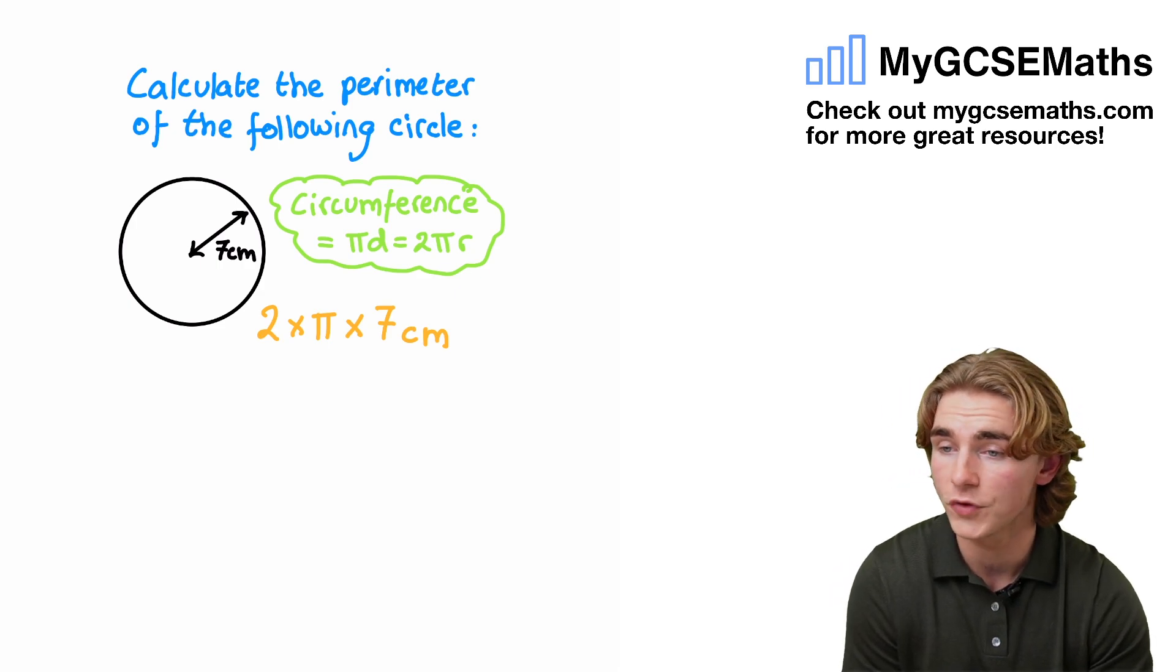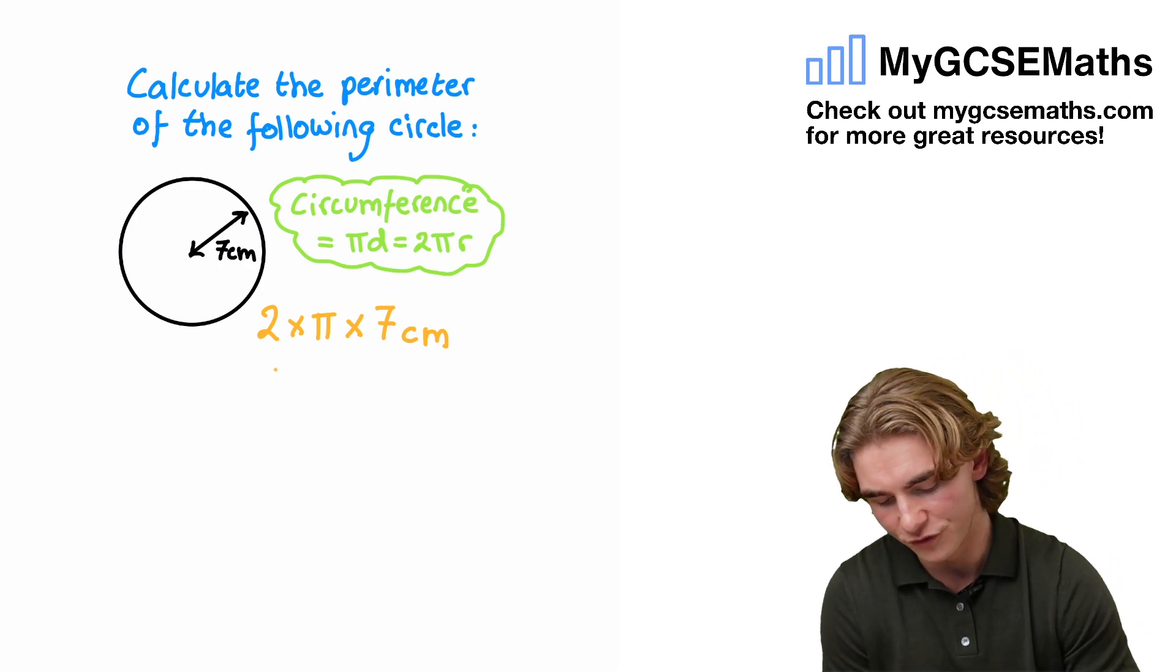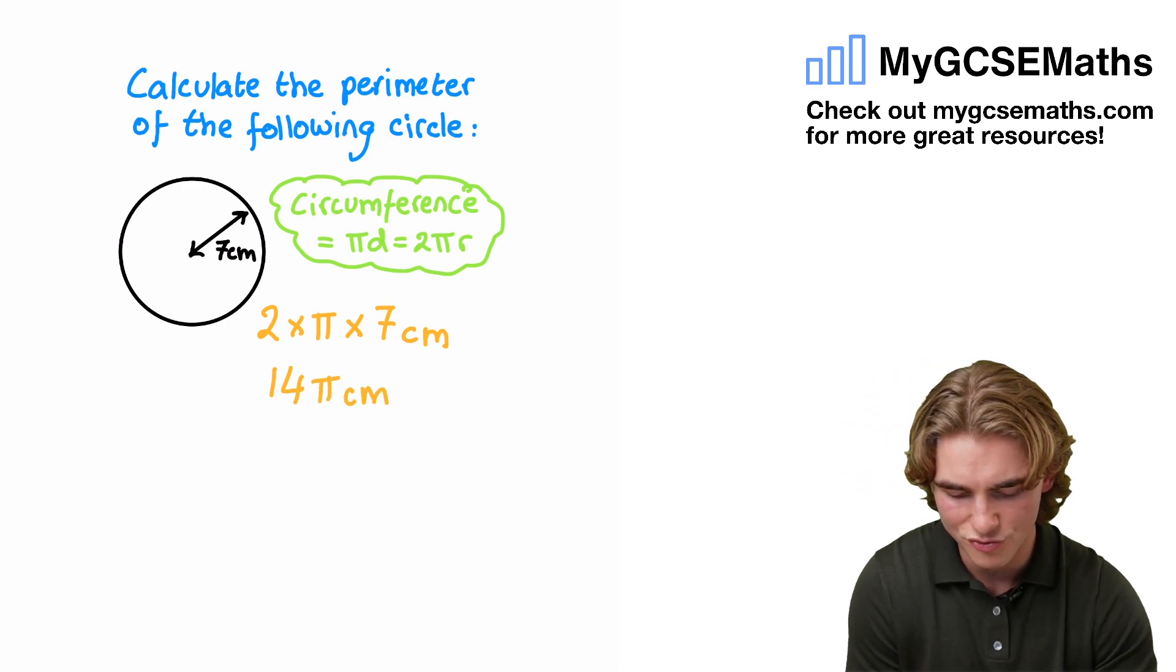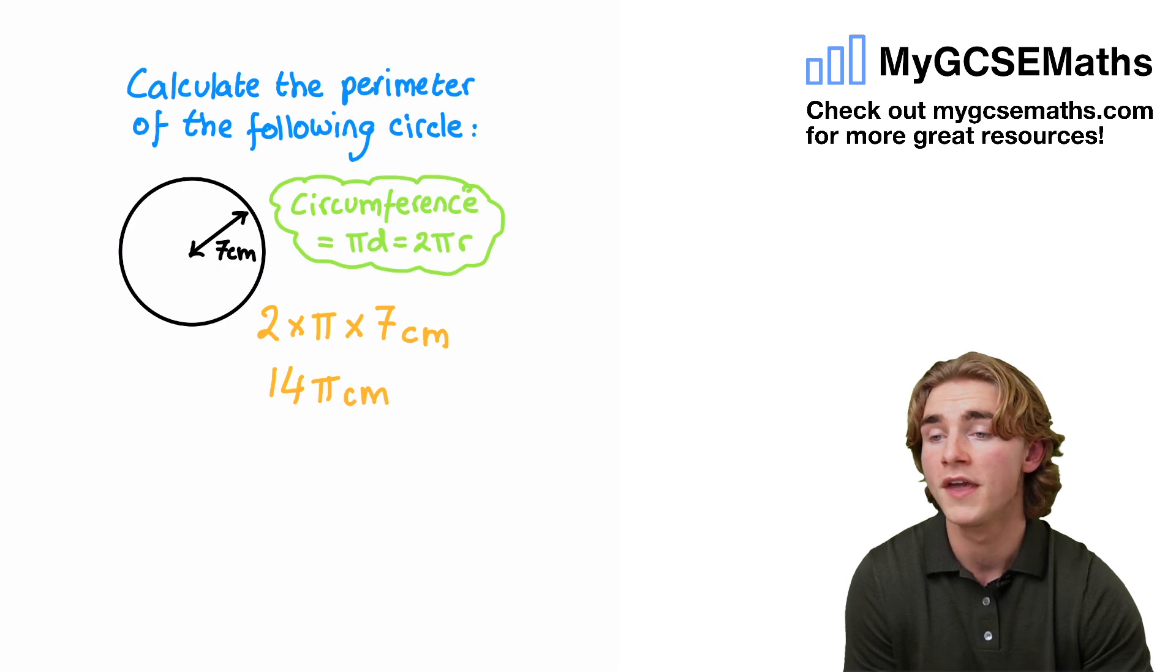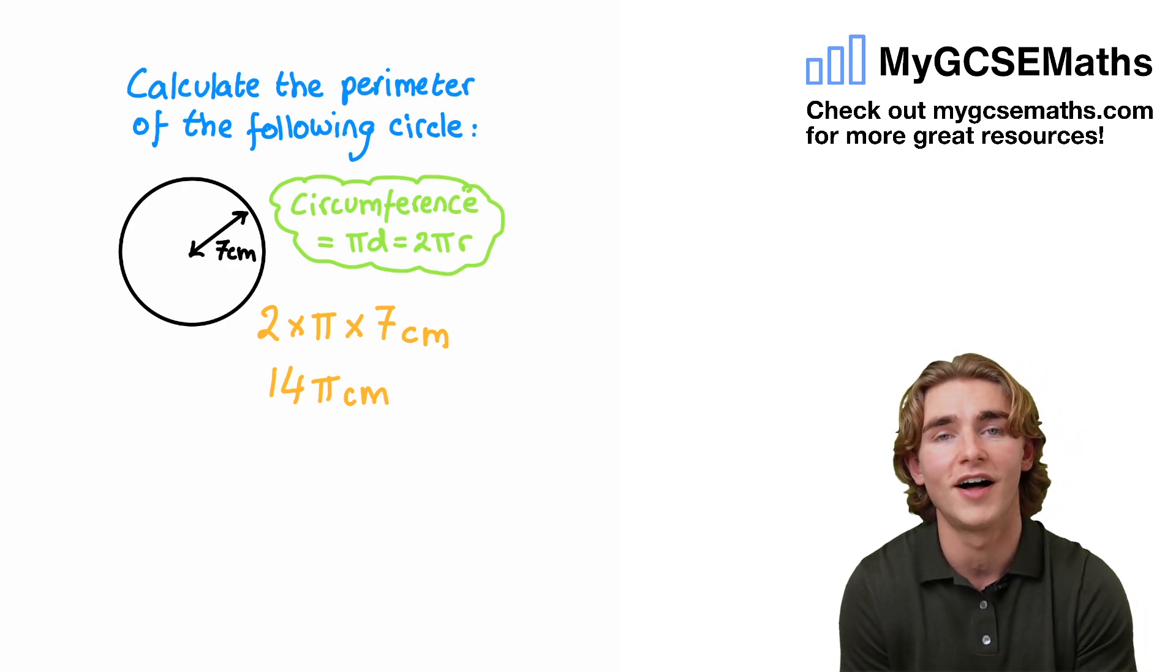We're going to leave this in terms of π. 2 times 7, guys, is 14, so we can give our answer here as 14π centimeters. If we wanted to, we could bring it into the calculator. It would be roughly 43, 44, but we don't have to. In this case, we're just going to leave it in terms of π.